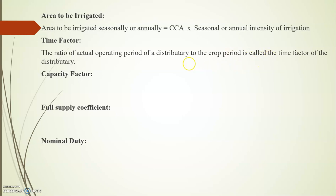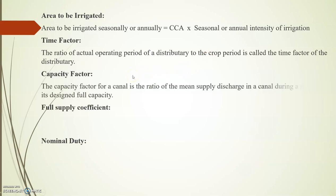The time factor of a distributary is the ratio of its actual operating period to the crop period. For example, if a distributary runs for 100 days and the crop period is 125 days, the time factor is 100/125. Capacity factor is the ratio of the mean supply discharge in a canal during a period to its design full discharge. For instance, if mean discharge is 2 cumecs and design capacity is 4 cumecs, capacity factor is 2/4.